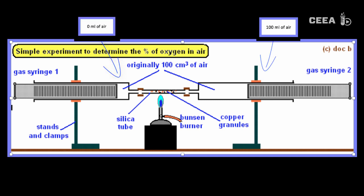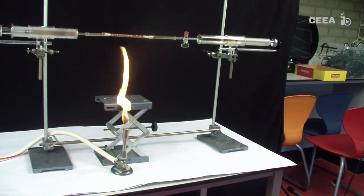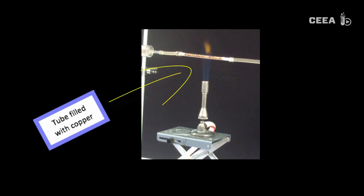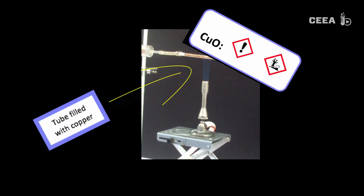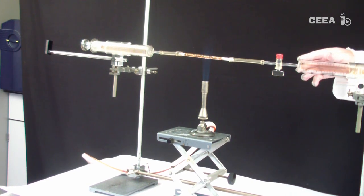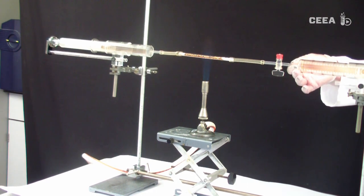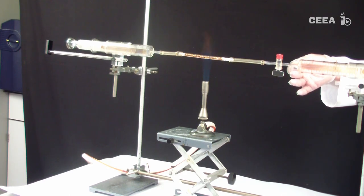First we light the Bunsen burner and start to heat the tube with the copper inside. We now start to move the syringes to and fro for approximately 50 times to pass the air over the hot copper. We continue the heating and the moving.